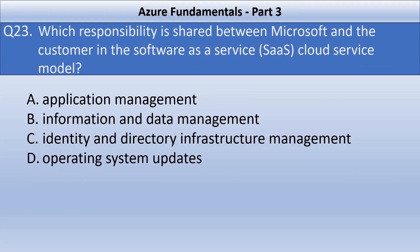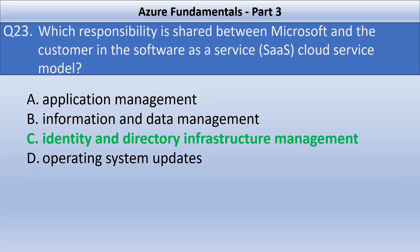Which responsibility is shared between Microsoft and the customer in the software as a service cloud service model? Your options are application management, information and data management, identity and directory infrastructure management, or operating system updates. The correct answer is option C, identity and directory infrastructure management. All the other three options are either completely the customer's or Microsoft's responsibility in the SaaS model. I have already explained the shared responsibility model in detail in previous parts of the series, so do not forget to check them out.